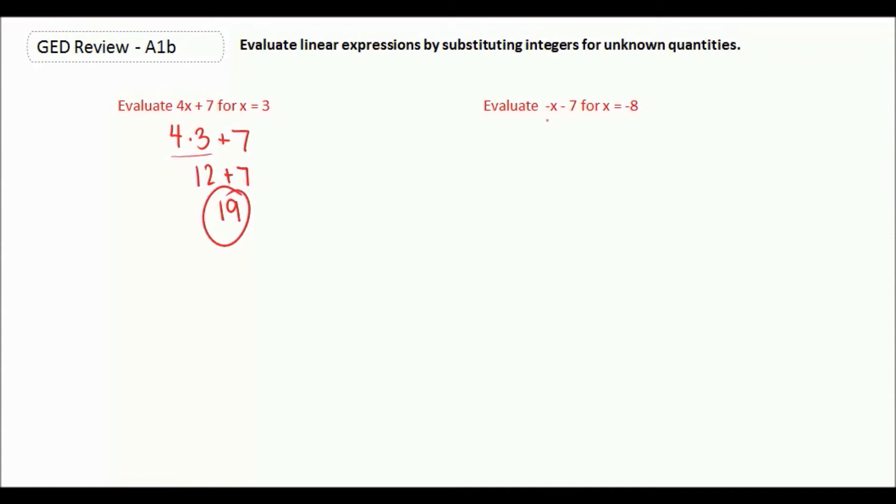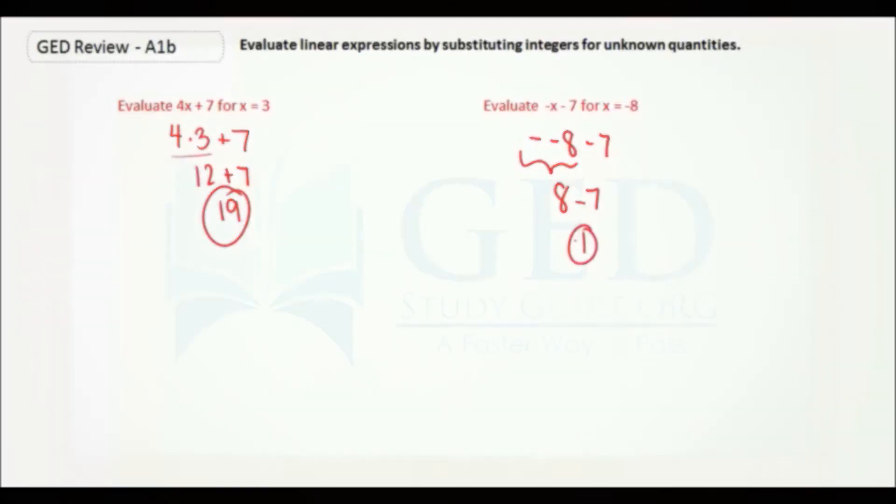This one here is a little bit trickier. We have a negative x, so we write down our negative from here, but our x happens to be negative 8, and then minus 7. Now that negative, negative 8, the two negatives really make it a positive. So positive 8 minus 7, and our answer is 1.